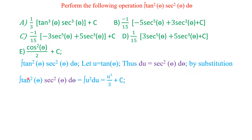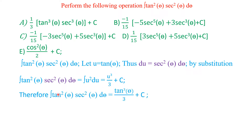We replace tan squared theta by u squared, and we also said that du would be equal to sec squared theta d theta, so we replace sec squared theta d theta by du. Now it is just a matter of integrating u with respect to du, so it will be u to the power 3 divided by 3 plus constant. Therefore our integration yields tan to the power 3 of theta divided by 3 plus the constant of integration. That ends this problem; let's move on to the next.